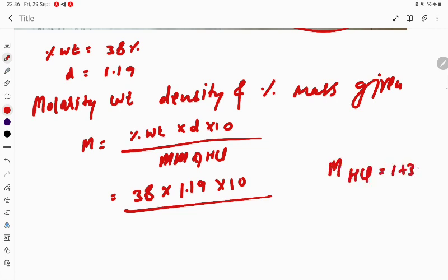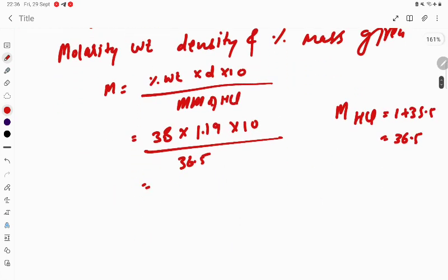The molar mass of HCl is 1 plus 35.5, which equals 36.5. So if you do this calculation, the value comes to 12.38 molar. That is the molarity.